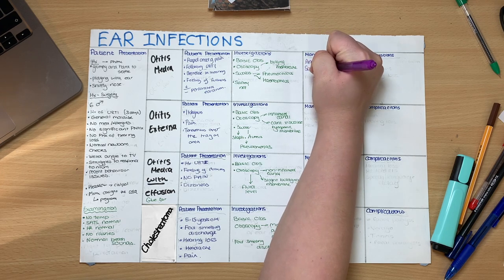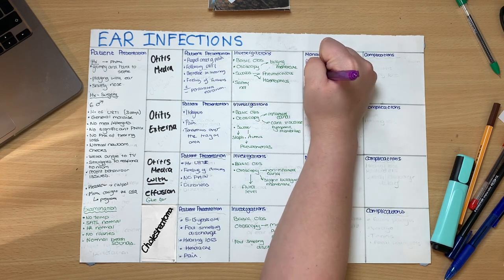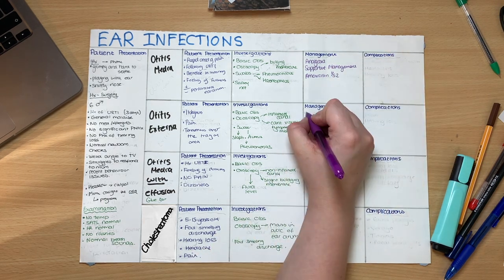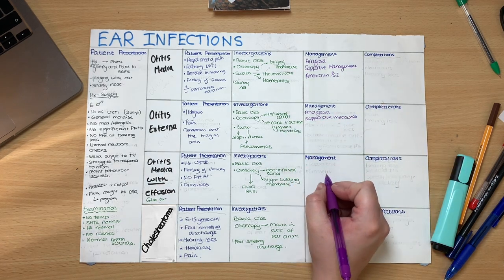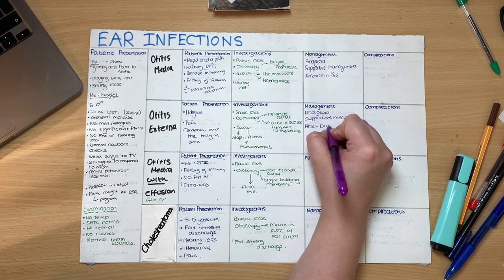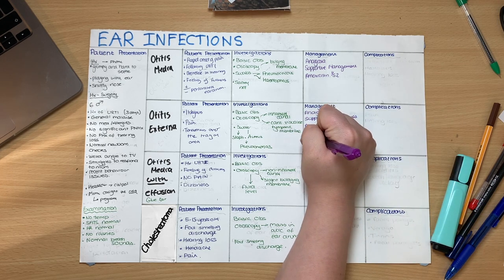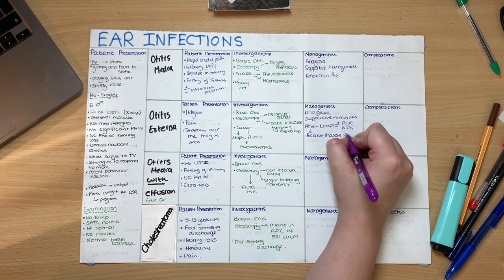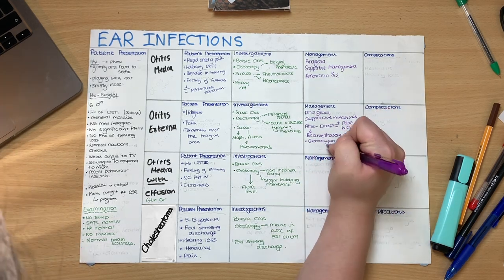Let's look at management. For otitis media, it's generally accepted to give analgesia and supportive management, as these infections generally tend to self-resolve. However, in more chronic cases, we can give amoxicillin for seven days to help the body fight off the infection. For otitis externa, again analgesia and supportive measures are generally the best approach. However, if antibiotics are required, they are administered as drops with or without the insertion of a pope wick — a small piece of fabric enabling the antibiotics to penetrate the swollen ear canal. Common drops to use are betamethasone at 0.1% and gentamicin, and hydrocortisone helps reduce the swelling in the ear to allow further penetration of the ear drops.